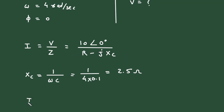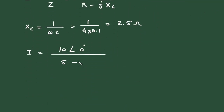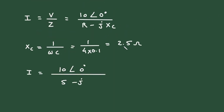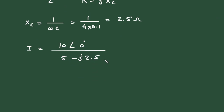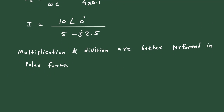So the value of I = 10∠0° divided by the impedance, where resistance R is 5 Ohm, giving us 5 − j2.5. This is in polar form divided by rectangular form. Since multiplication and division are better performed in polar form, we will convert 5 − j2.5 into its equivalent polar form.